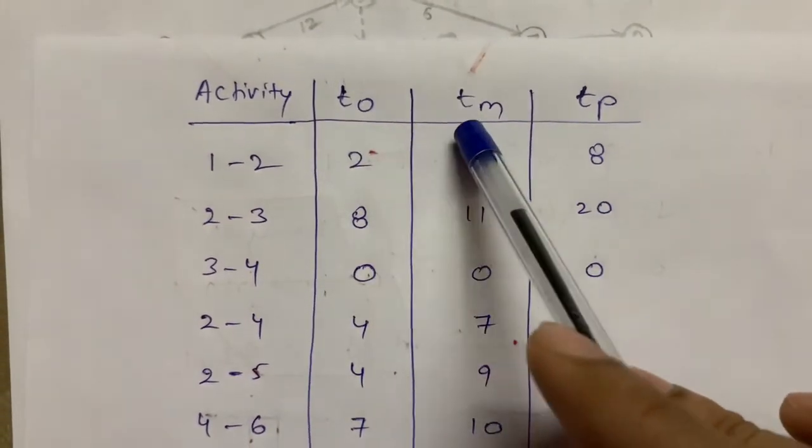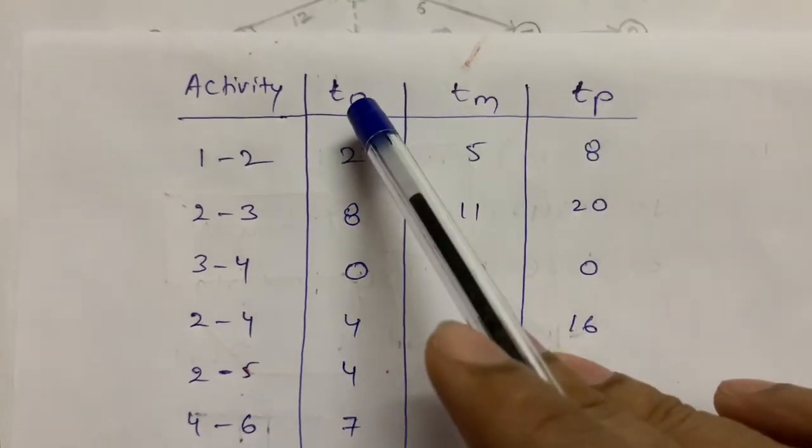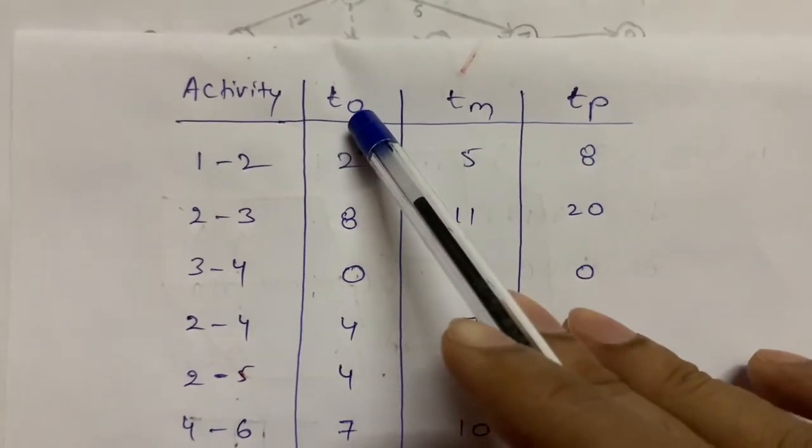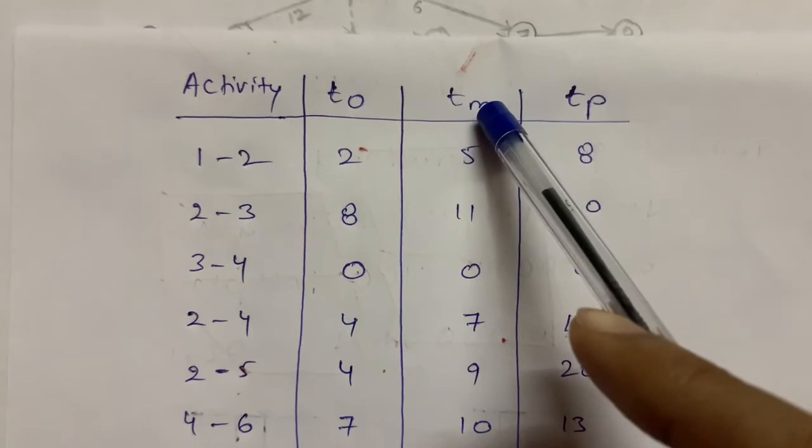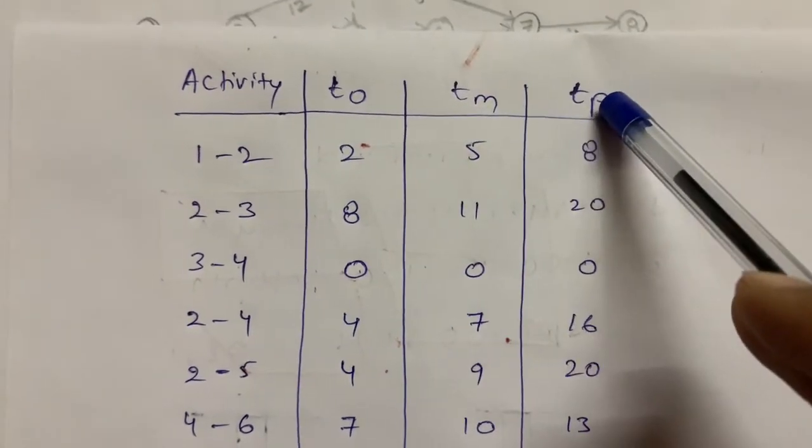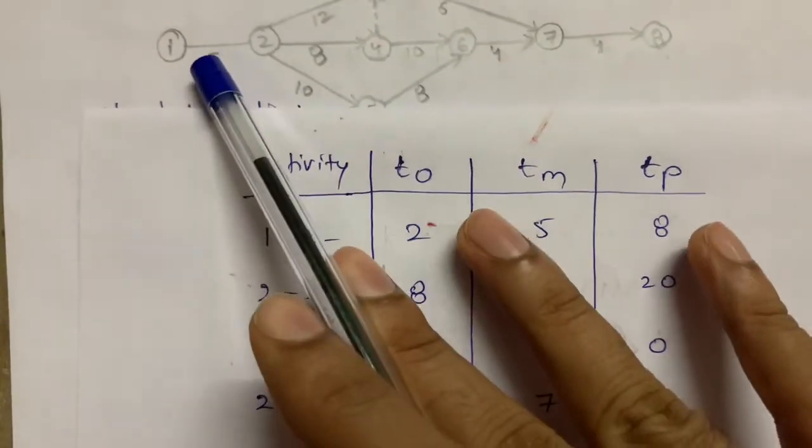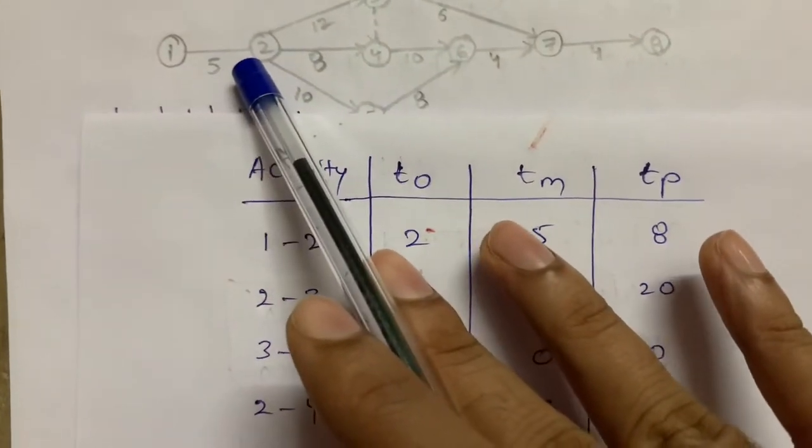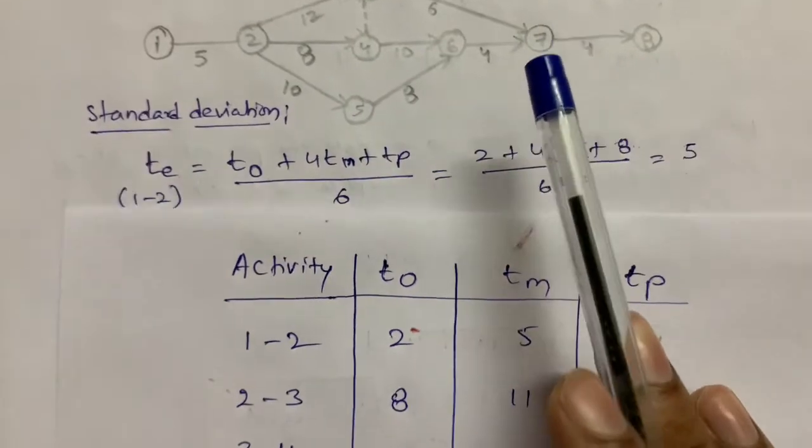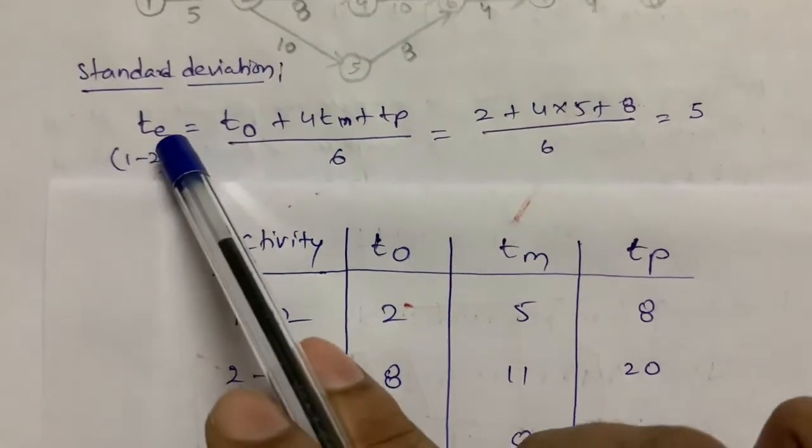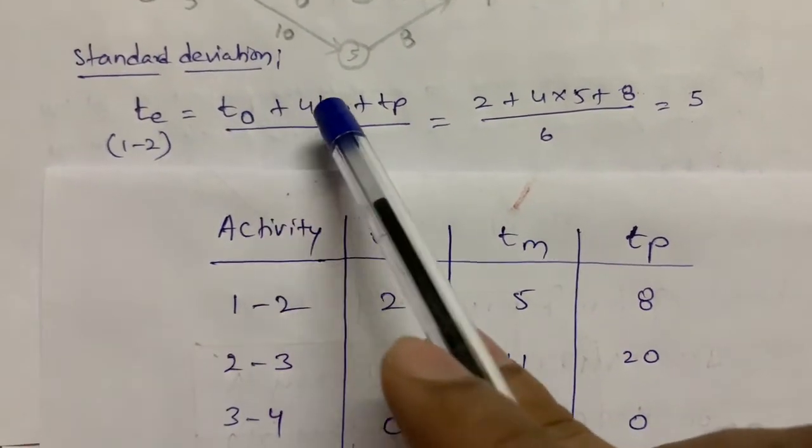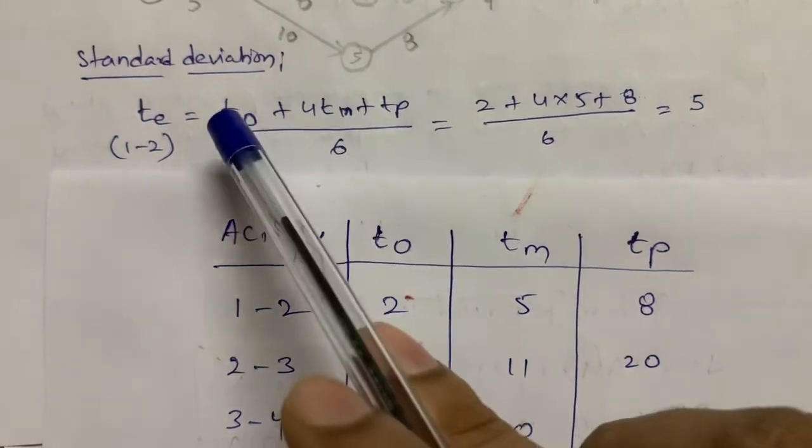That is TO, TM and TP. TO is nothing but optimistic time. TM is nothing but most likely time. And TP is nothing but pessimistic time. We need to find out for this activity, how many hours or how many days we need to complete this activity. For that, expected time formula is T equal to TO plus 4 TM plus TP by 6.